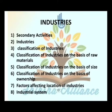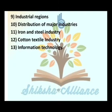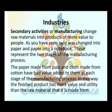These are the topics we will cover in this chapter: Secondary Activities, Industries, Classification of Industries on the basis of Raw Materials, Size, and Ownership, Factors Affecting Location of Industries, Industrial System, Industrial Regions, Distribution of Major Industries, Iron and Steel Industry, Cotton Textile Industry, and Information Technology.